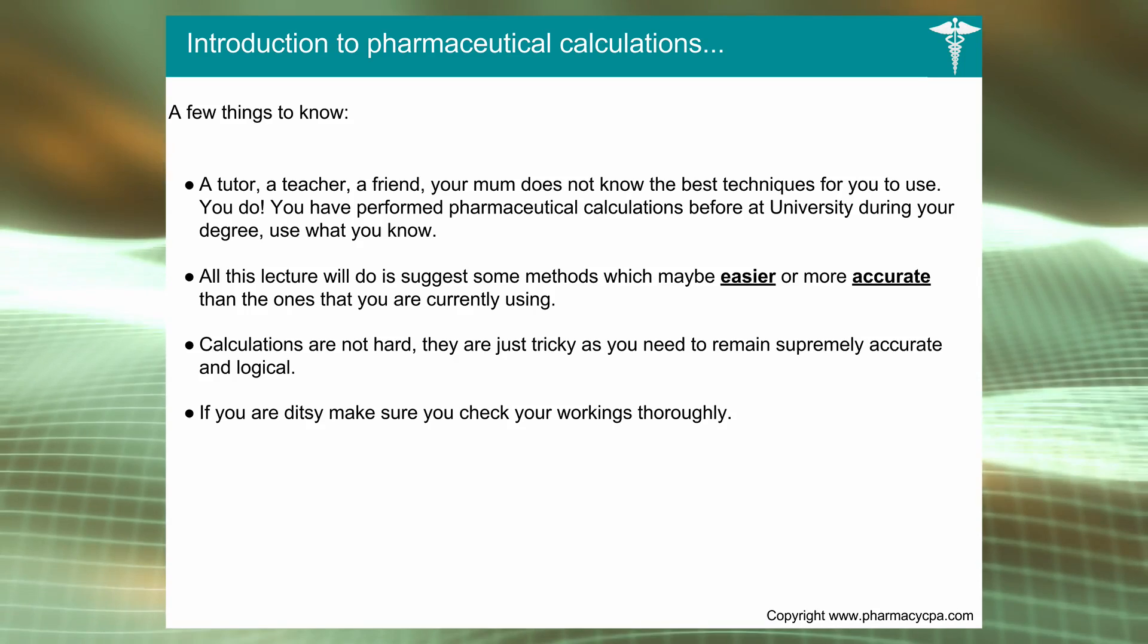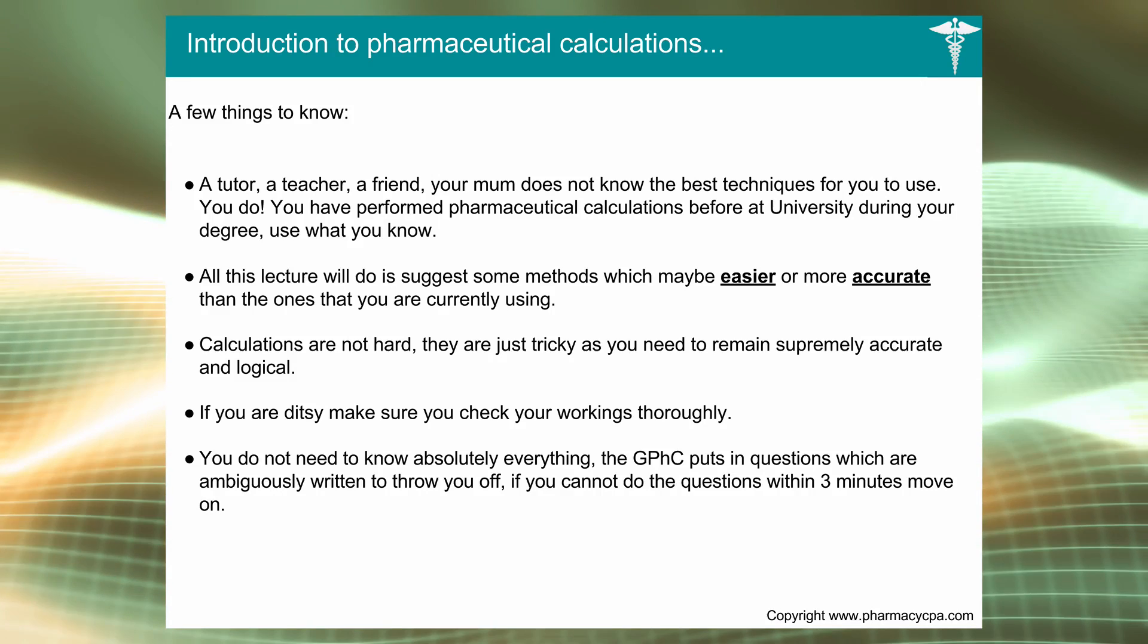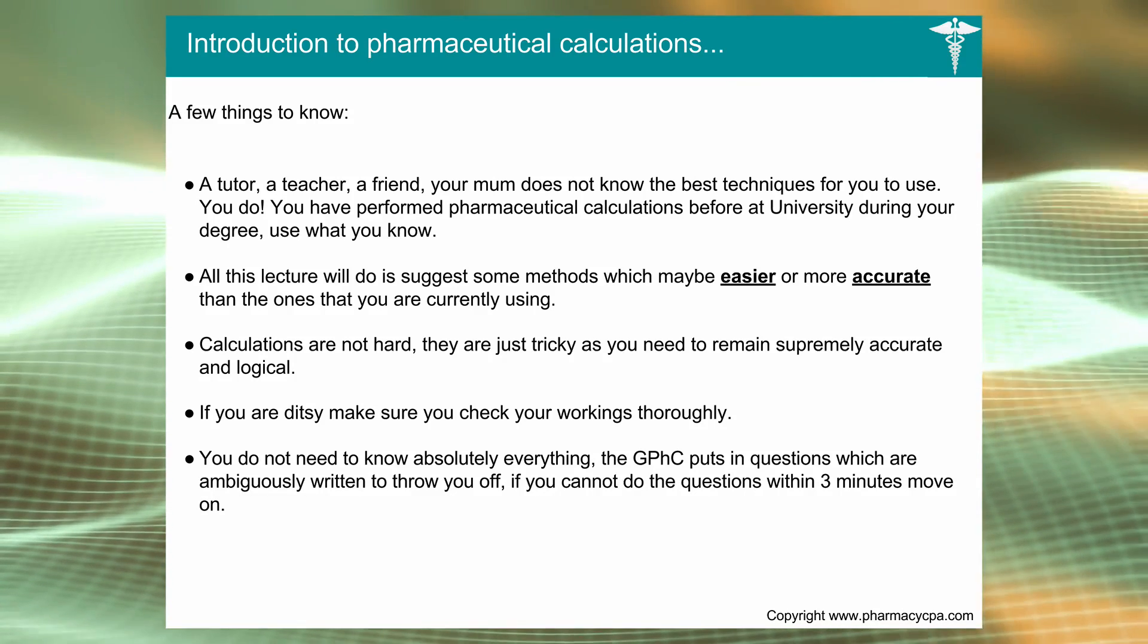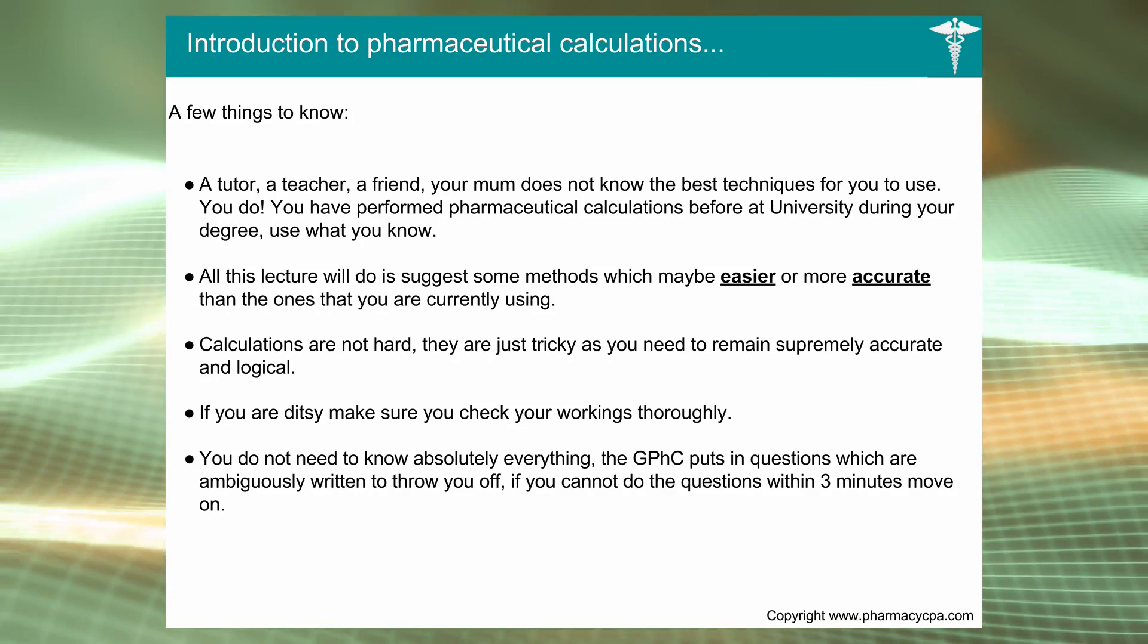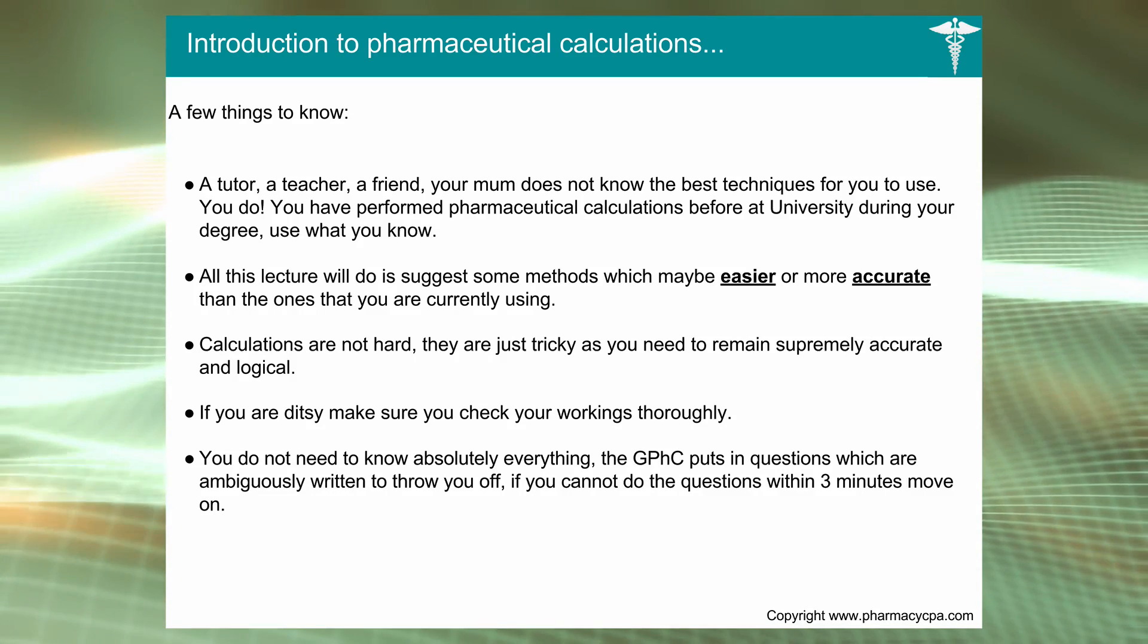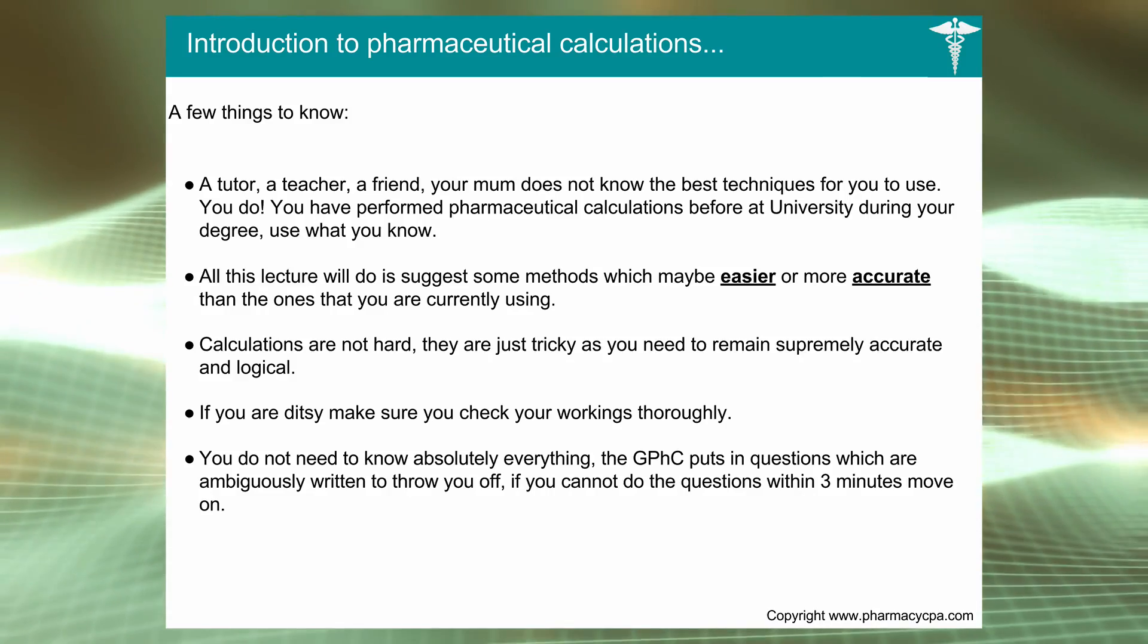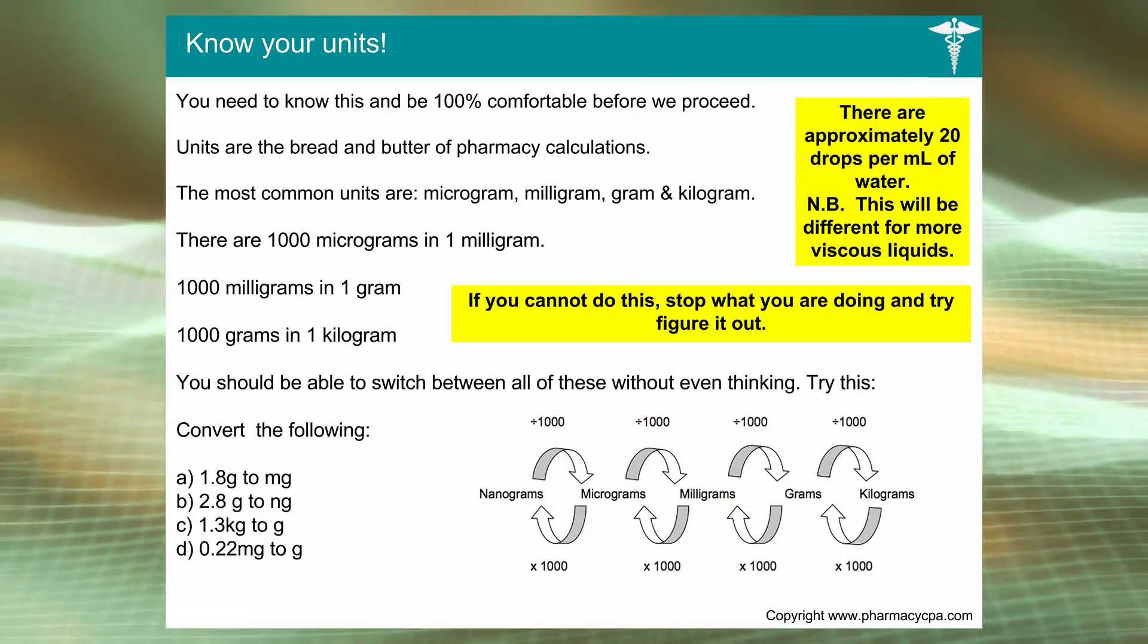You don't need to know everything. The GPhC puts questions in which are ambiguously written which you can't answer in the timeframe. You've got something like two minutes to get the answer. If you see something which is mind-bogglingly complex, remember you only have to get 14 questions out of 20 correct. It's great to get all of them correct, but some may take up too much time and may not be as accurate as you'd like, so skip it and move to the next one.